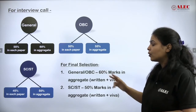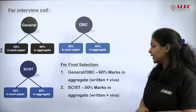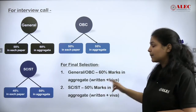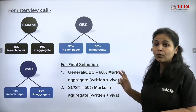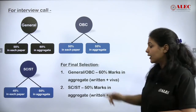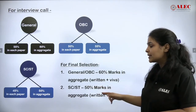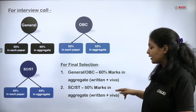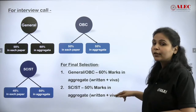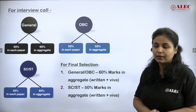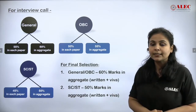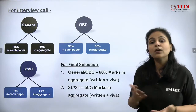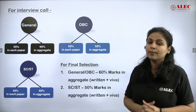For the final merit list, if you are in the general or OBC category you must meet the minimum score requirements, and if you are in the SC/ST category you need 50% in aggregate — combining written and interview scores. A final merit list will then be prepared based on these criteria.